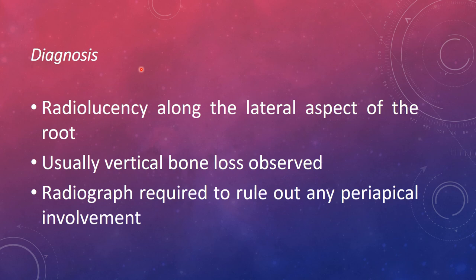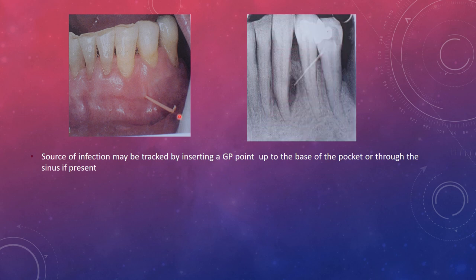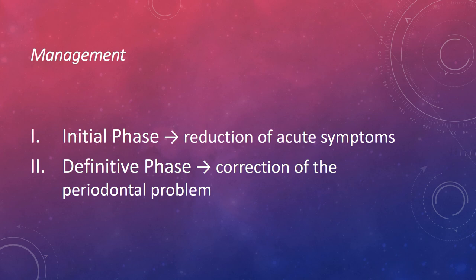For diagnosis, in periodontal abscess the radiolucency is along the lateral aspect of the root and usually a vertical type of bone loss is seen. Radiographs are required to rule out any periodontal involvement. In periodontitis cases, the source of infection may be tracked by inserting a GP point to track the sinus tract through the pocket or existing sinus, followed by a radiograph to identify the abscess area.